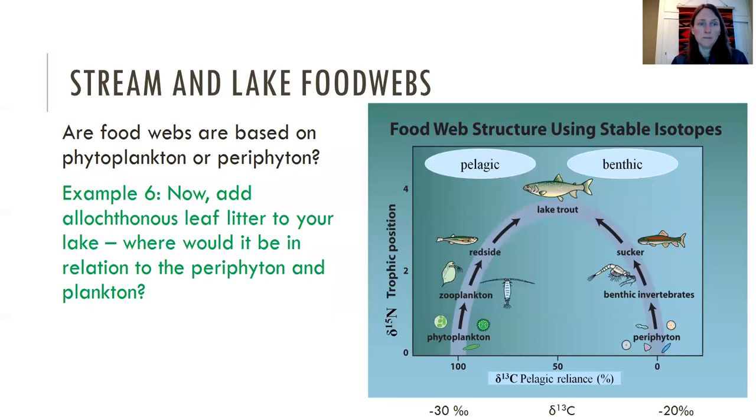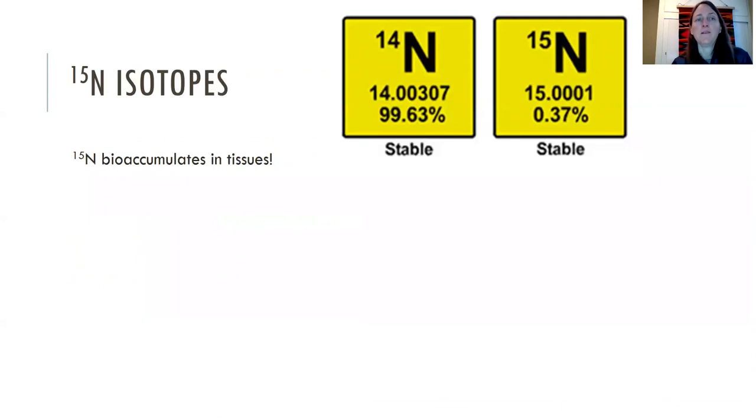And that can help us kind of build these food webs. But we're still missing something. And we're going to talk about allochthonous leaf litter. So if you had algae periphyton and phytoplankton, and you also had some leaf litter coming in, where would you put that leaf if it had a terrestrial C3 signature in your food web? So try to do that one. And then this last bit, the trophic position on this graph, you can see that has to do with N15, and that's the next one.